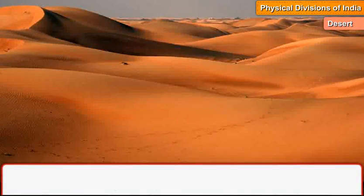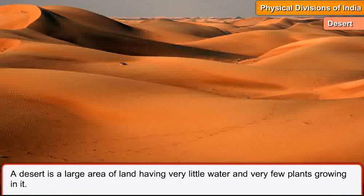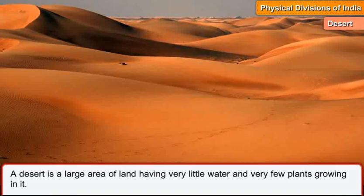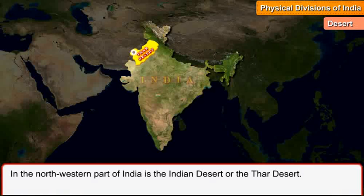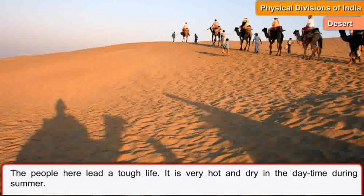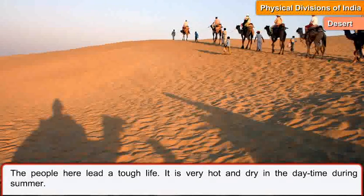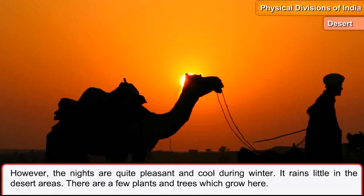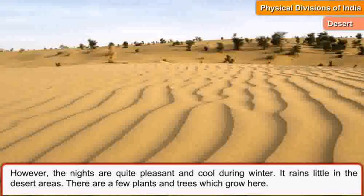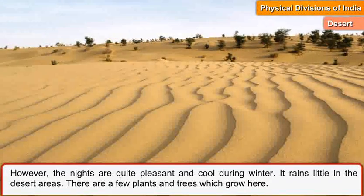Desert. A desert is a large area of land having very little water and very few plants growing in it. In the north-western part of India is the Indian Desert or the Thar Desert. The people here lead a tough life. It is very hot and dry in the daytime during summers. However, the nights are quite pleasant and cool during winter. It rains little in the desert areas. There are a few plants and trees which grow here.